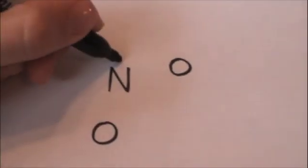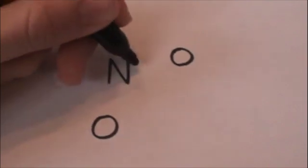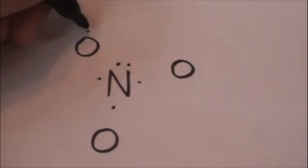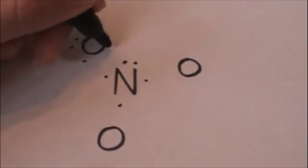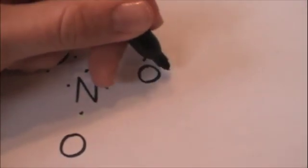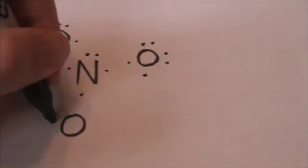And nitrogen has 1, 2, 3, 4, 5 valence electrons. Oxygen has 6. It's in group 6A. 1, 2, 3, 4, 5, 6.